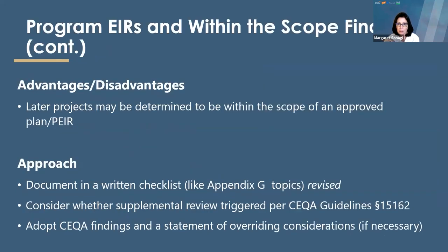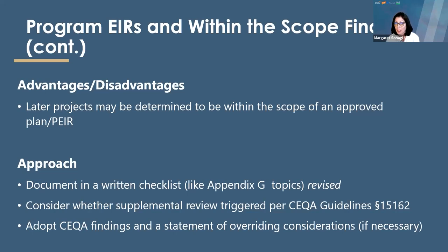Preparing some sort of written checklist is advised. Take something like the initial study checklist in Appendix G and revise it to ask whether you need to do any supplemental work. Look at Section 15162 for whether supplemental review would be required. And remember, you're still going to adopt certain findings in a statement of overriding considerations if you have significant unavoidable impacts.